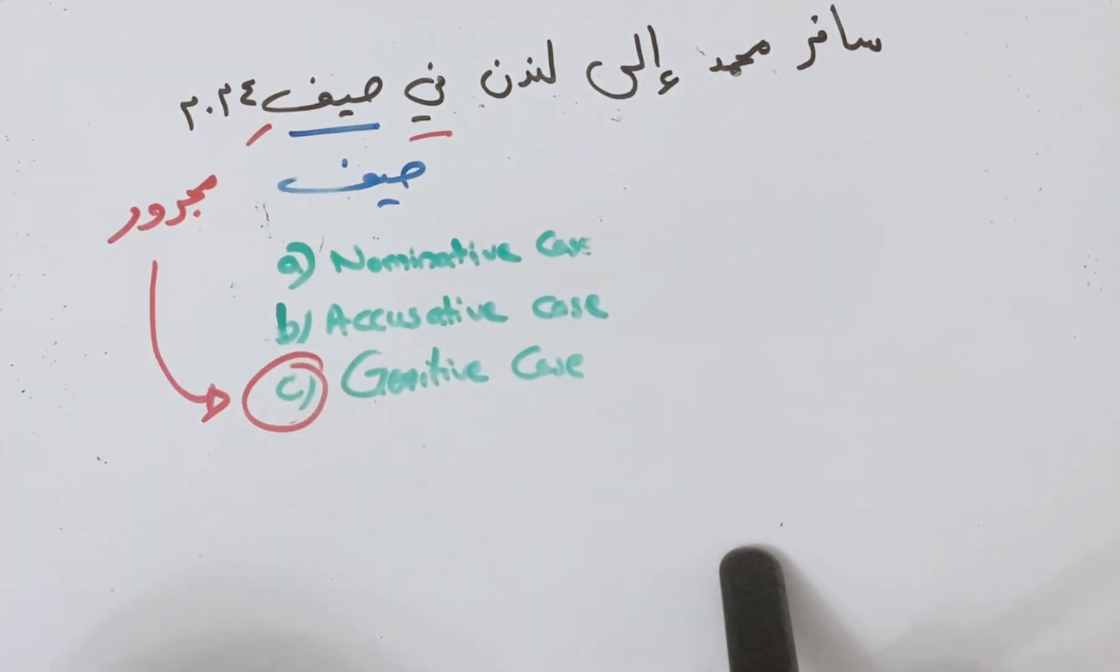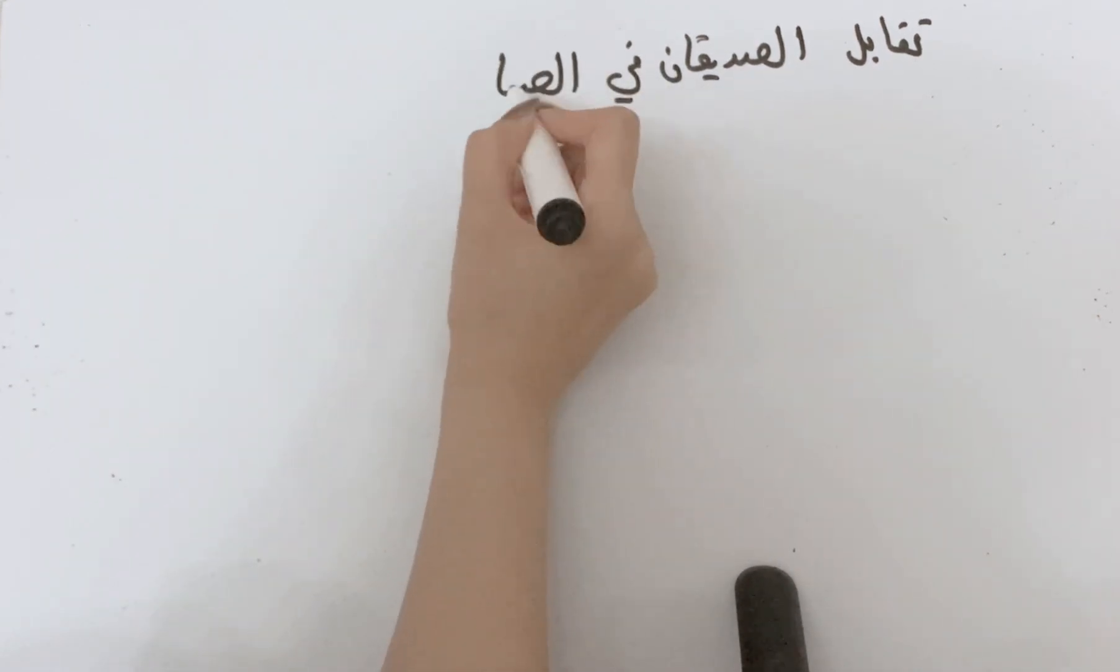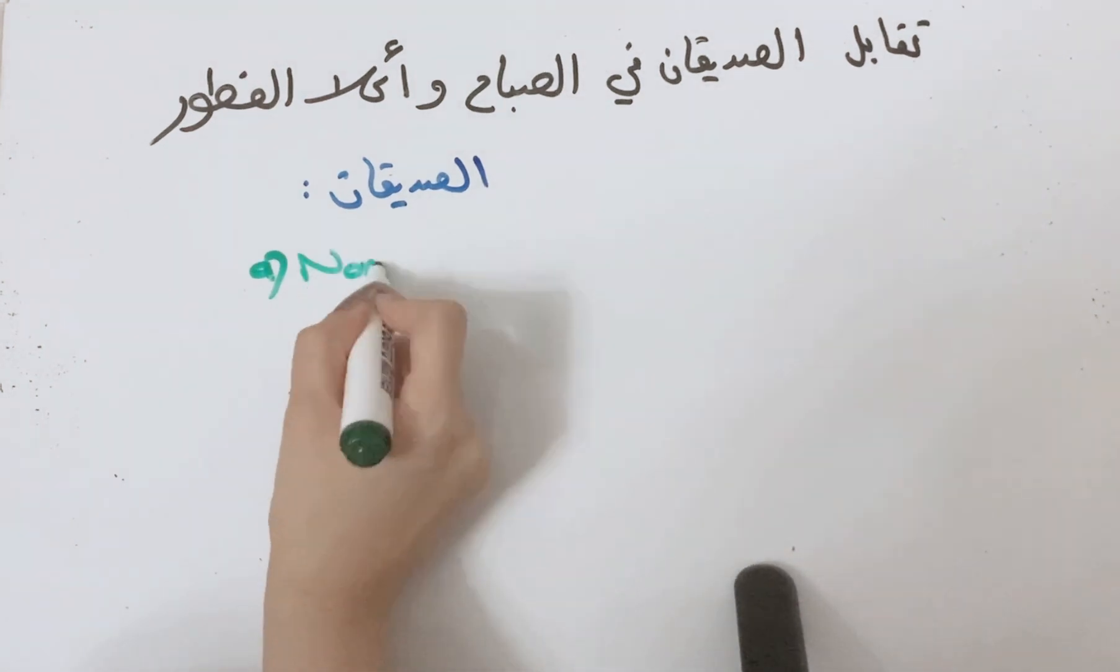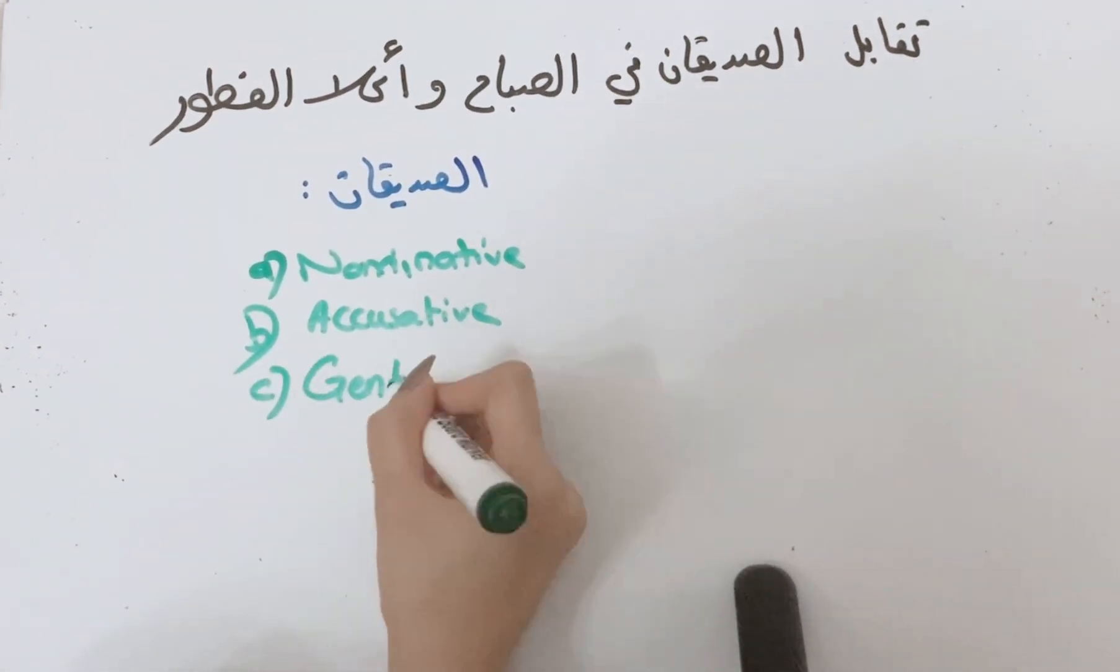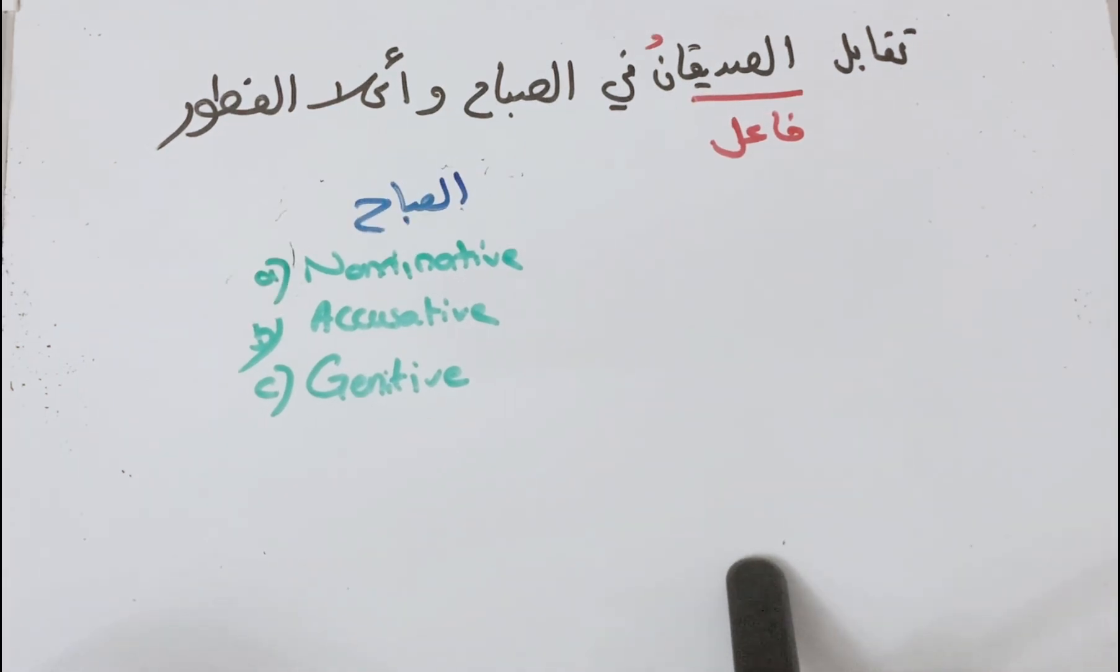Next sentence, I hope you solve it correctly on your own. Please leave your answers in the comments section. Taqabal as-sadiqan fi as-sabah wa'akal al-futoor. What is as-sadiqan? Pause the video and have a go. It's nominative. Next, as-sabah.